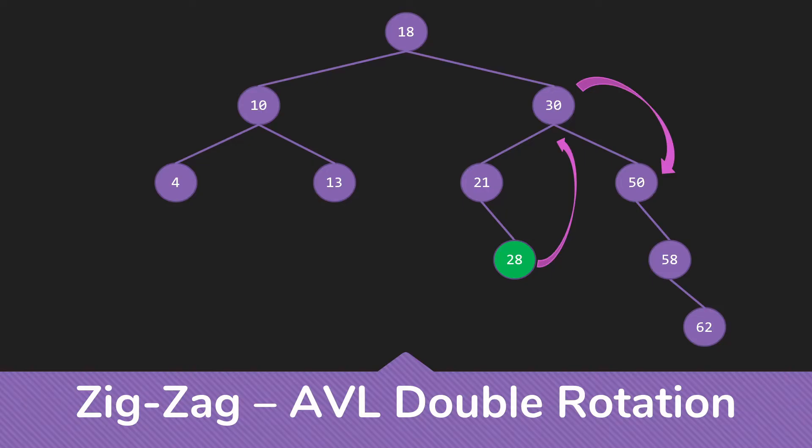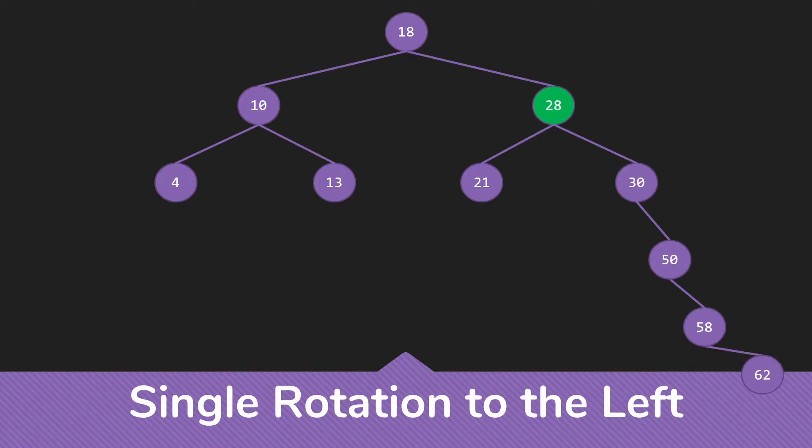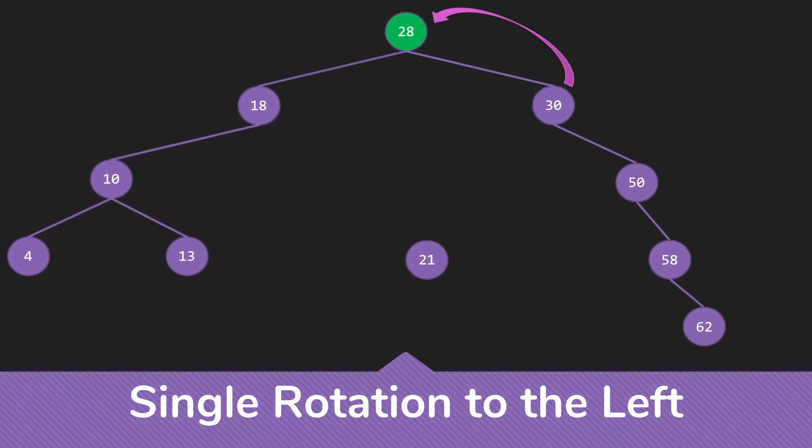We'll see why we refer to this as a zigzag rotation instead of just calling it a double rotation in a bit. So we're going to be moving the 28 up to the 30 and rotating down where the 30 is. We actually don't have any extra children involved here. So this is a fairly simple process. Now, we're not all the way to the root yet. So we need to do a single rotation to the left. Again, we'll pull the child out of the way, do the rotation and attach the child to the 18.